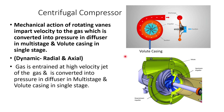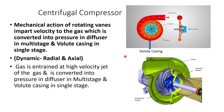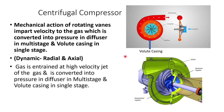Now let us see what happens in centrifugal compression. In centrifugal compression, the mechanical action of rotating vanes imparts velocity to the gas, which is converted into pressure in the diffuser — in a multi-stage volute casing for multi-stage machines and in a single-stage volute casing for single-stage machines. There are two types of centrifugal compressors: radial flow and axial flow.